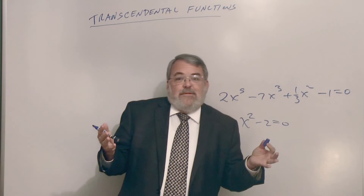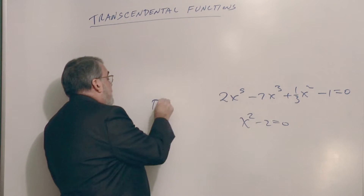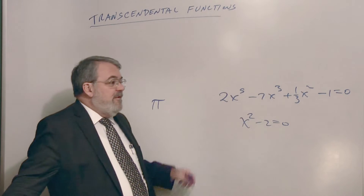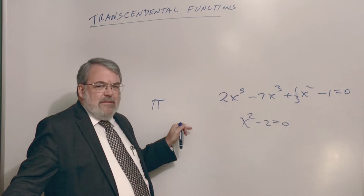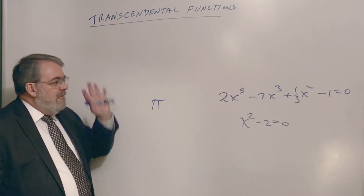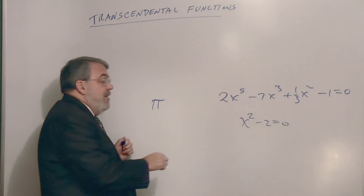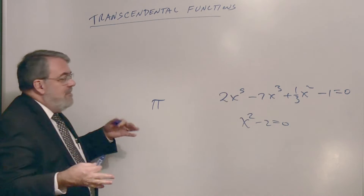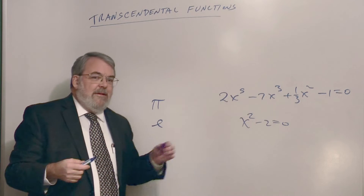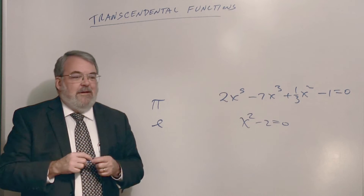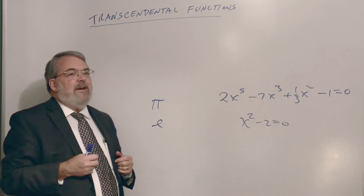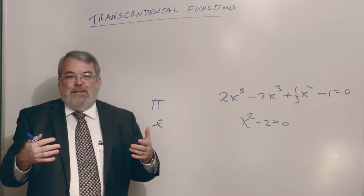A good example of transcendental numbers: pi. Pi is a transcendental number. It was really difficult to prove — not proven until the 1870s, maybe early 1880s, by a guy named Lindemann. Pi is not the root of any polynomial with rational coefficients. e is also transcendental, though that was not quite as hard to prove as pi. When you think about it, almost all numbers are transcendental — the algebraic ones are actually the more exceptional case.